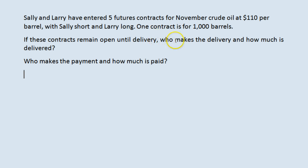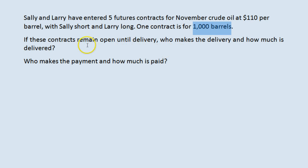So who makes the delivery? Sally. She is obligated to sell the oil. And how much is delivered? That has to do with the number of contracts — five — and how much each contract represents — 1,000 barrels. So Sally is going to deliver 5,000 barrels of oil to Larry in November.